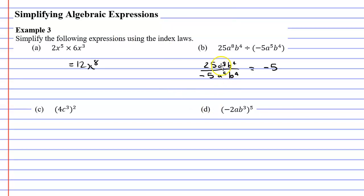We have the same bases — they both have a base of A. And because it's division we're going to subtract the powers. We're going to go 8 minus 5 which is 3, so we're going to write A to the power of 3. Next we've got B to the power of 4 and it's got the same power for both of them. 4 minus 4 is actually 0, so when you get the exact same powers you can cancel them out. We cancel out B to the power of 4, which means our final simplified expression is negative 5A cubed.